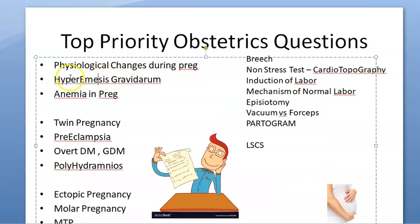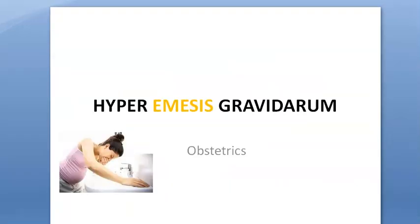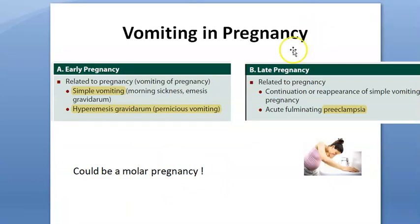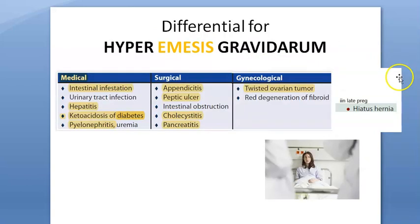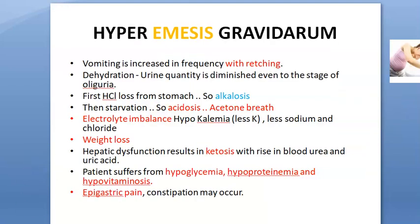Now let's move on to hyperemesis gravidarum, which is basically excessive vomiting — not just simple vomiting. It can be excessive and incapacitating, deteriorating her health. There is no specific volume threshold; it is basically affecting her. It can also be caused by things other than pregnancy, like appendicitis, intestinal infection, hepatitis, ketoacidosis of diabetes, pancreatitis, or peptic ulcer — so don't only think it is pregnancy.